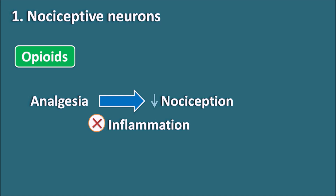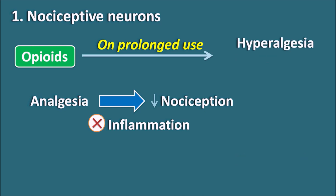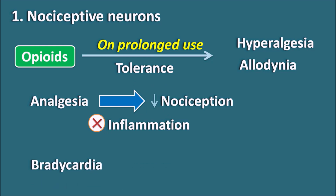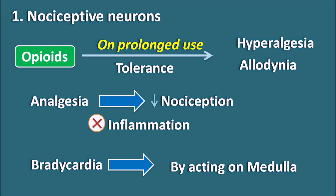Another difference between opiates and NSAIDs: when opiates are used for a longer period, they can produce tolerance, and because of this the pain sensation may be further increased. Within patients we can observe hyperalgesia — increased sensation of pain — as well as allodynia. Allodynia is a condition where nociception is stimulated by non-nociceptive stimuli, so even a non-painful stimulus can produce pain. Opiates can also produce bradycardia, not by directly acting on the heart but through central neurons. Opiates can produce inhibitory response on a few centers within the medulla, thereby reducing heart rate.